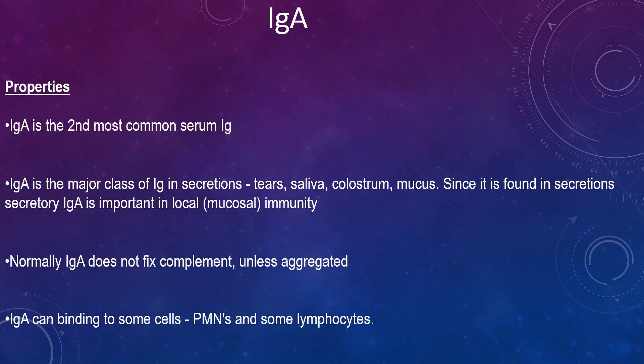IgA is a monomer in serum but is found in secretions as a dimer. When it exists as a dimer, a J chain is associated with it. When IgA is found in secretions, it also has another protein associated with it called the secretory piece. Secretory IgA is sometimes referred to as an 11S immunoglobulin. Unlike the rest of IgA, which is made in plasma cells, the secretory piece is made in epithelial cells and is added to IgA as it passes into the secretions. The secretory piece helps IgA to be transported across the mucosa and also protects it from degradation in secretions. IgA is the second most common serum immunoglobulin and is the major class found in secretions such as tears, saliva, colostrum, and mucus. It is involved in local mucosal immunity. It does not fix complement unless aggregated and can bind to some cells such as PMNs and some lymphocytes.